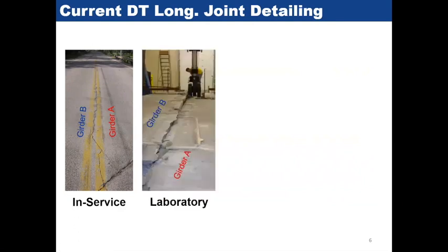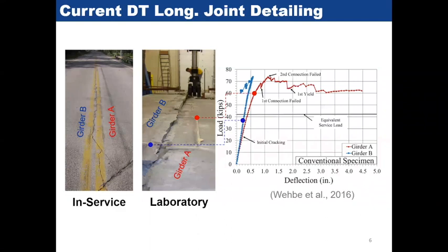Dr. Waby tested a 40-foot double T bridge using a conventional joint currently used in practice. He applied vertical force using actuators on one of the girders. What was found is that the joint is not sufficient and cannot transfer load from one girder to another. The force-deformation of the two girders was not consistent — the loaded girder took all of the load and the other one did not.